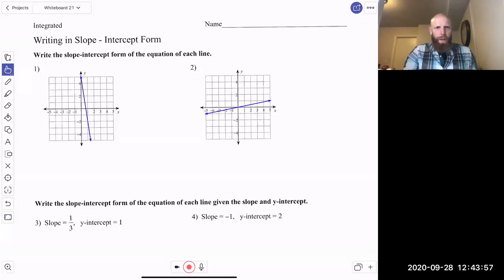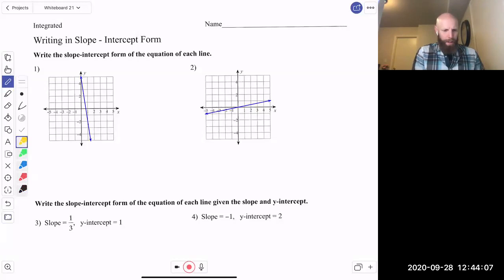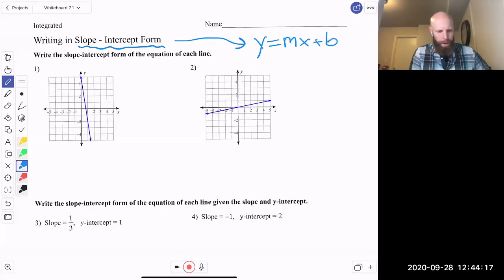Okay, so we are going to do writing in slope intercept form. One of the things that we really need to remember is what is slope intercept form, right? So let's start there. Slope intercept form of an equation you always want to remember is y equals mx plus b, where we know that m is the slope, b is the y-intercept.